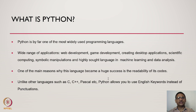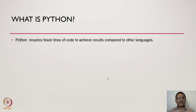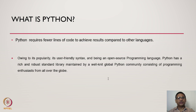Unlike other programming languages such as C, C++, Pascal, etc., Python allows you to use English keywords instead of punctuations. Python requires fewer lines of code to achieve results compared to other programming languages. Due to its popularity, its user-friendly syntax, and being an open source programming language, Python has a rich and robust standard library maintained by a well-knit global Python community consisting of programming enthusiasts from all over the globe.